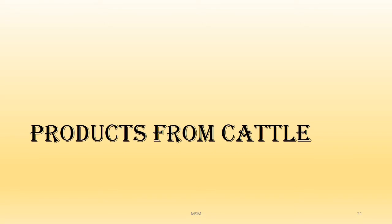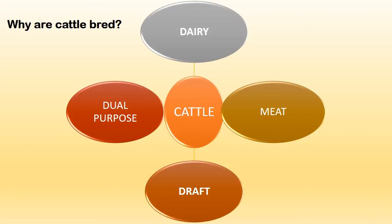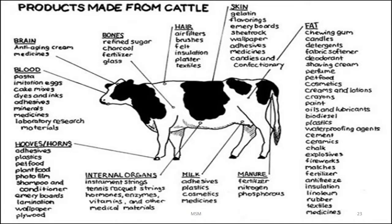What are the different products we get from cattle? Today, cattle are bred for dairy, meat, draught, and dual purposes — that is either dairy and meat or meat and draught, depending on what the farmer wants or needs. It is not just milk and meat that we get from the cow; different organs can be used for other purposes also.